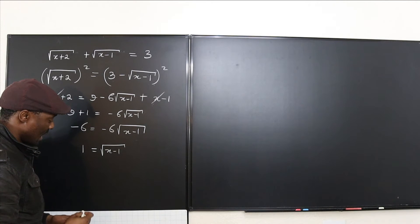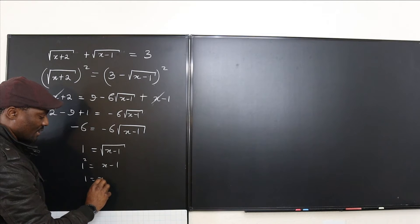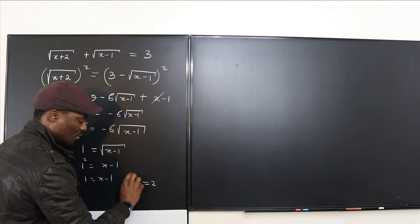When we square both sides, we get 1 squared equals x minus 1. That's 1 equals x minus 1 and tells us that x equals 1 plus 1, which is equal to 2.